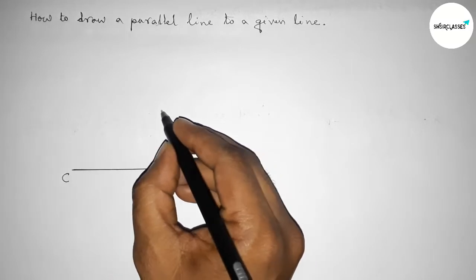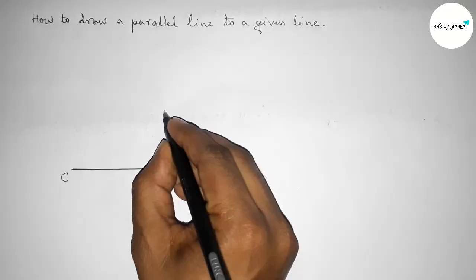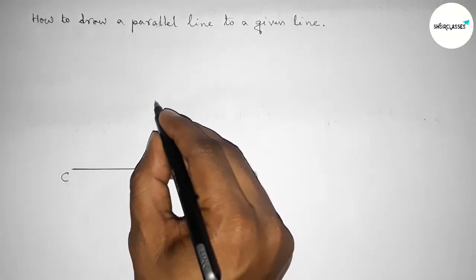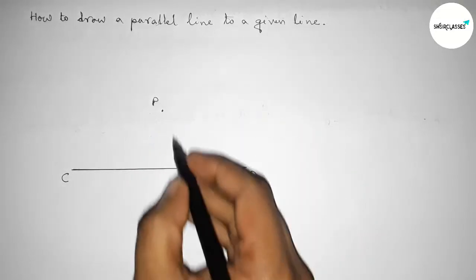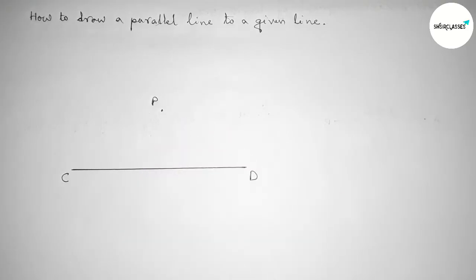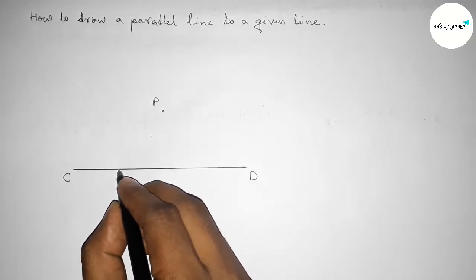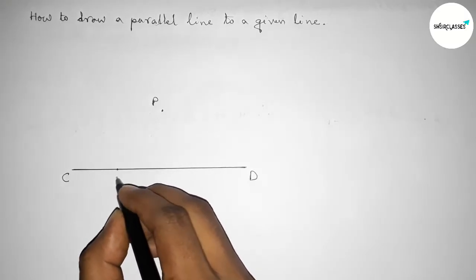So taking here a point P. You can take here or here also as your choice. Next, taking another point on the line CD here, so taking here a point Q. You can choose here or here also as your choice.